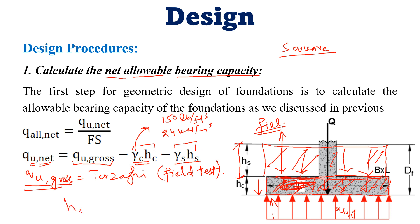If we add h_s plus h_c, this equals d_f — the depth of foundation. So the depth of foundation is divided into two parts: h_c, the height of the concrete foundation (solid part), and h_s, the fill or backfill placed over the foundation to cover the excavated trench back to the surface of the earth.